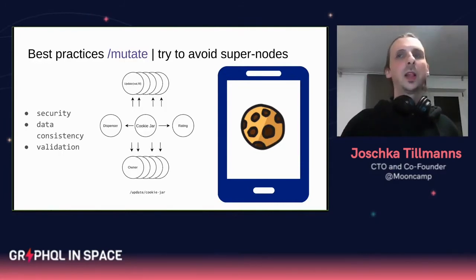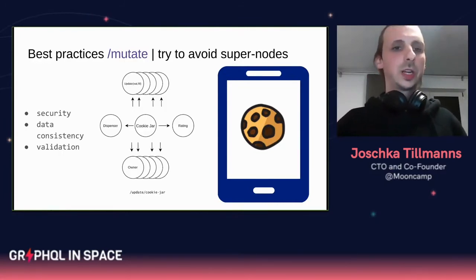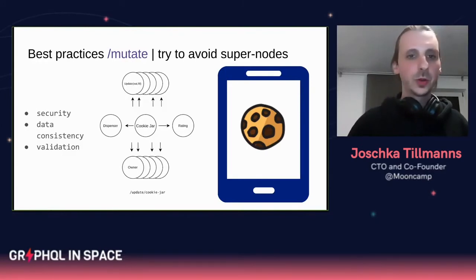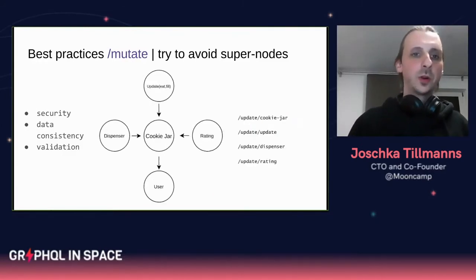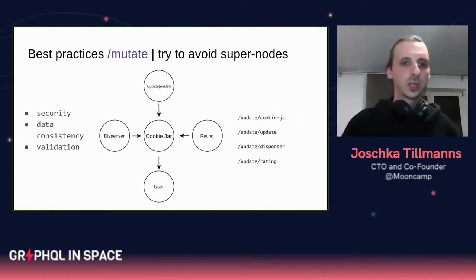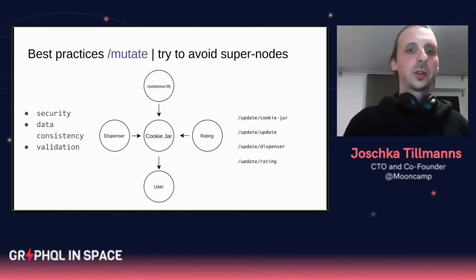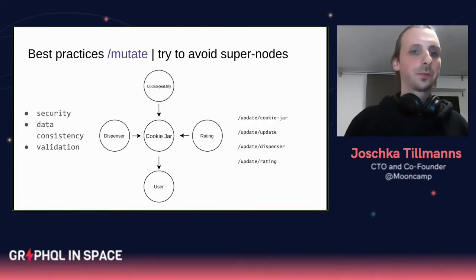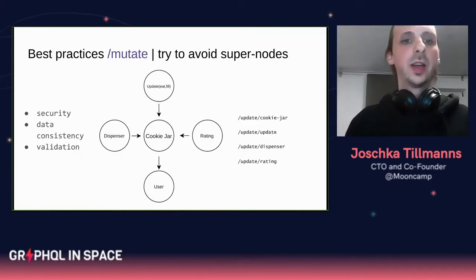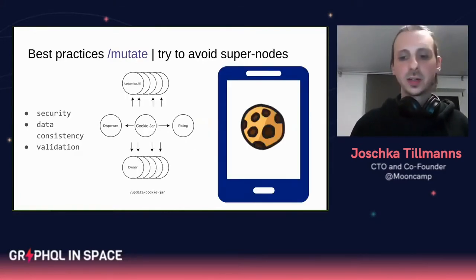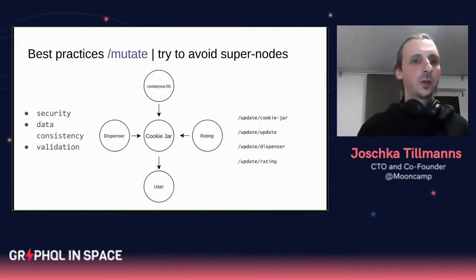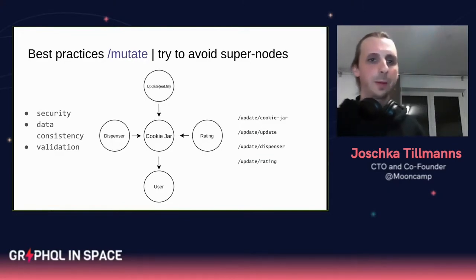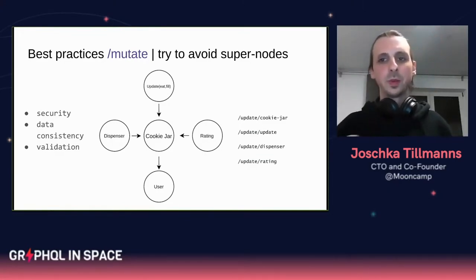What we found instead of building up those super-nodes — where the cookie jar is the parent — is to just reverse relationships. You store the dispenser on its own, or you store a rating on its own, and then create a reference in the reverse direction. So the dispenser has a relation to the cookie jar, not the other way around. This way you can implement security, data consistency, and data validation for each of those sub-nodes independently, and really simplify your code base.